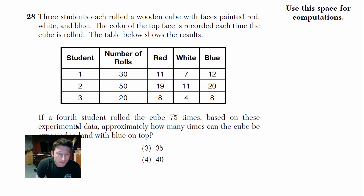What I'm concerned about is, I want to know, let's see. If a 4th student rolls the cube 75 times, based on the experimental data, approximately how many times can the cube be expected to land with the blue on top? So we want to know the chances of us rolling the cube and getting blue. So I'm going to use the data that they already gave us to figure out, well, what were the chances that it happened already? So for student number 1, they rolled it a total of 30 times, but he got blue 12 times. So that's 12 out of 30.